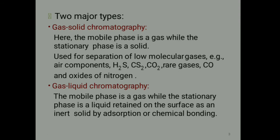There are two major types. First, gas solid chromatography, where the mobile phase is a gas while the stationary phase is a solid. It is used for separation of low molecular gases, for example, air components such as hydrogen, sulfur, carbon dioxide, rare gases, carbon monoxide, and oxides of nitrogen.